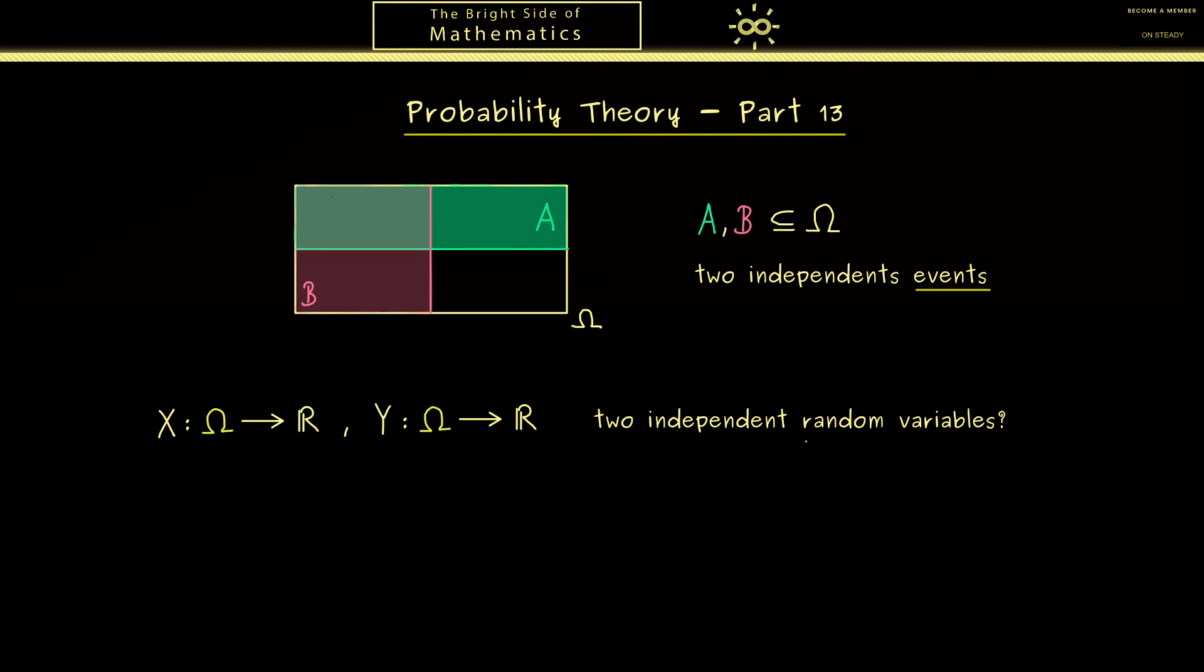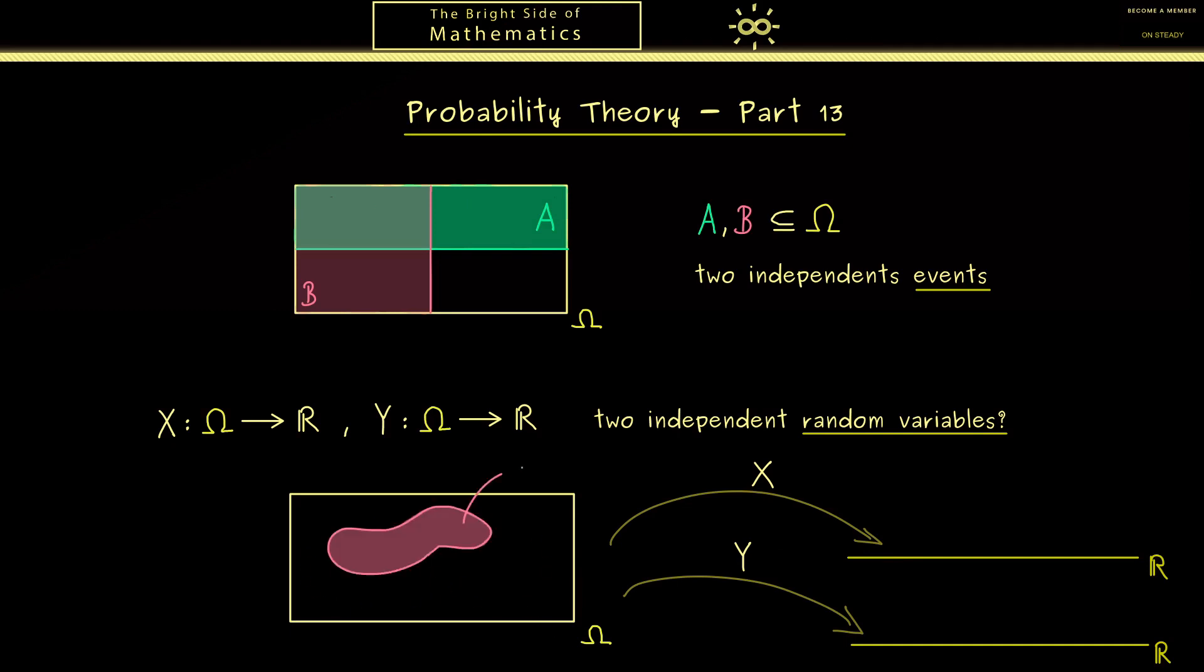Now the question is for two random variables X and Y, how do we define independence? Or to say it differently, how do we get back to the independence of events? Indeed this is not hard to answer because X and Y map omega to the real number line. Therefore we just have to look at pre-images of X and Y to get a collection of events in omega.